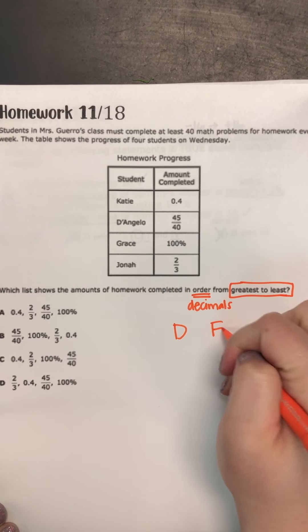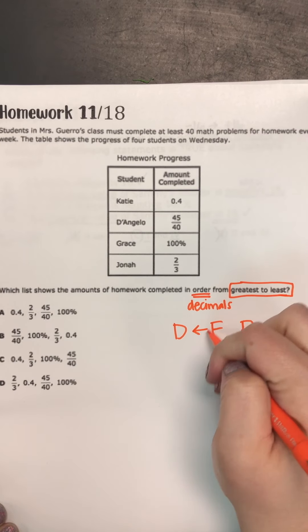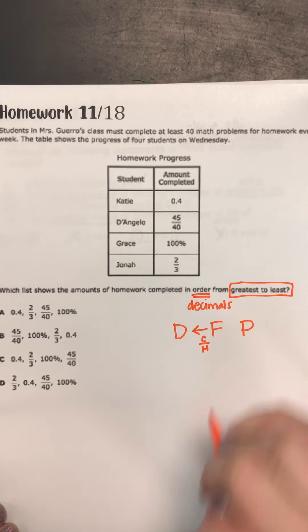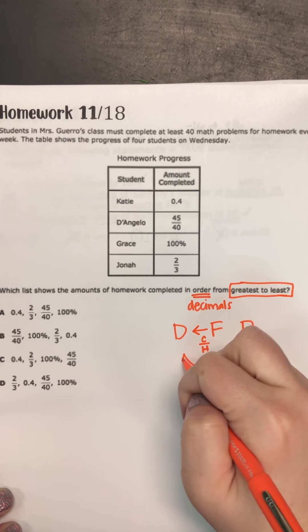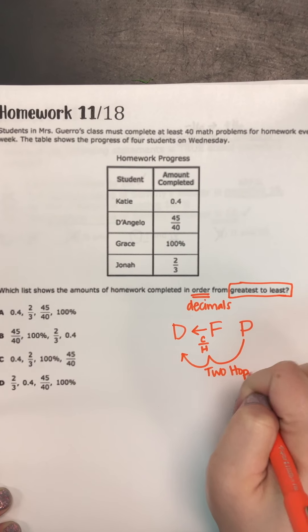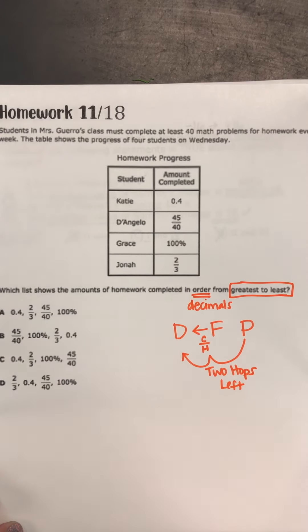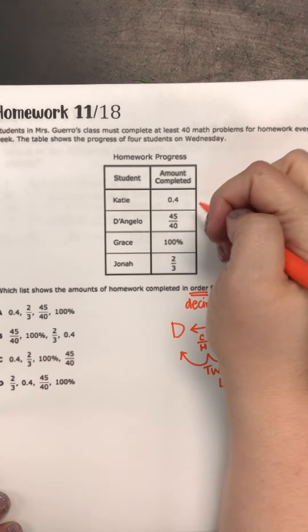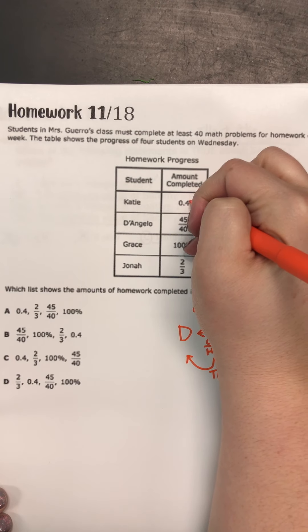Remember we have decimal, fraction, and percent. If we're doing a fraction, we're going to cowboy and horse. If we're moving a percent, we're going to do two hops to the left. So let's turn all of these into decimals. And remember when we make decimals, we want to make them look like money, and money has two decimal places.